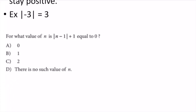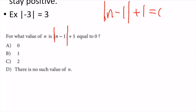For what value of n is |n - 1| + 1 = 0? I'll write that out: |n - 1| + 1 = 0. Solving like any equation, I subtract 1 from both sides: |n - 1| = -1.